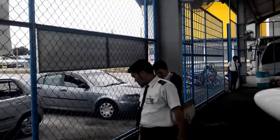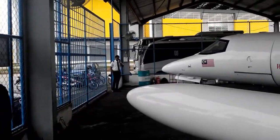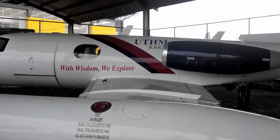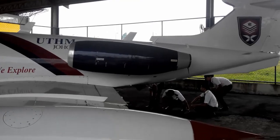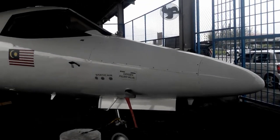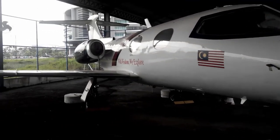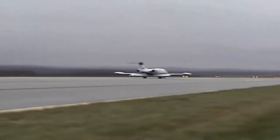Universiti Tun Hussein Onn acquired one of those aircraft back in 2012. The Learjet that UTHM owns is an eight-seater aircraft powered by two General Electric CJ-610 turbojet engines, with each providing over 13.1 kN of force. The Learjet 24 can be categorized as a regional private jet with a flying range of 2728 km.